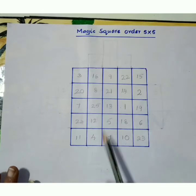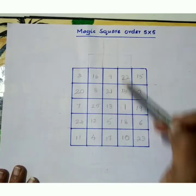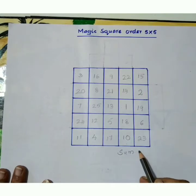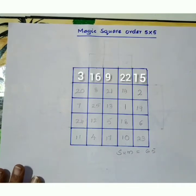Now add row wise or column wise or diagonal wise. We will get sum is equal to 65. Let us take one more example.